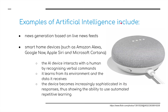Other examples of Artificial Intelligence might include news generation based on live news feeds, smart home devices such as Amazon Alexa, Google Home, Google Now, Apple Siri, and Microsoft Cortana. The AI device interacts with a human by recognizing verbal commands. It learns from its environment and the data it receives. The device becomes increasingly sophisticated in its responses, thus showing the ability to use automated, repetitive learning.